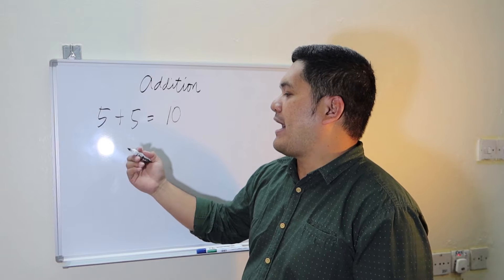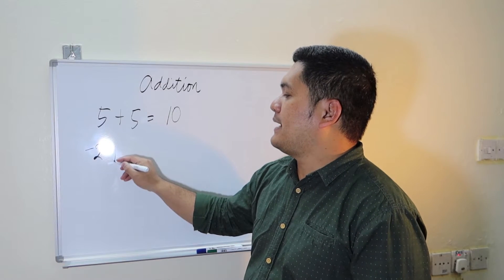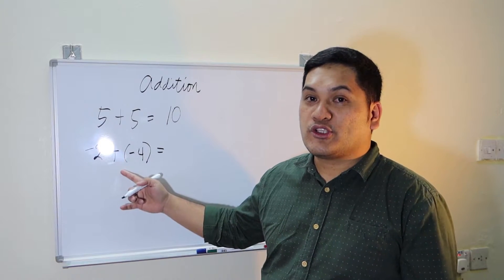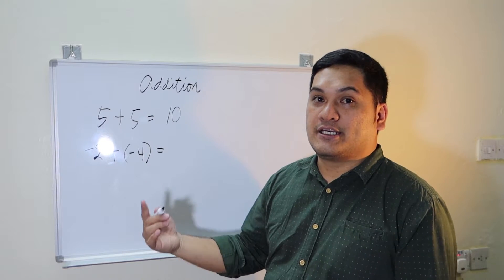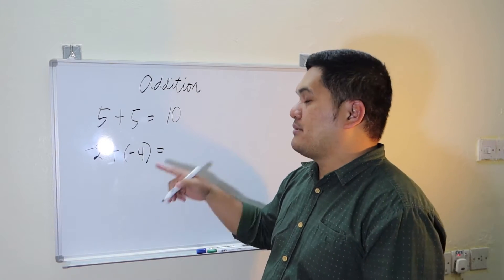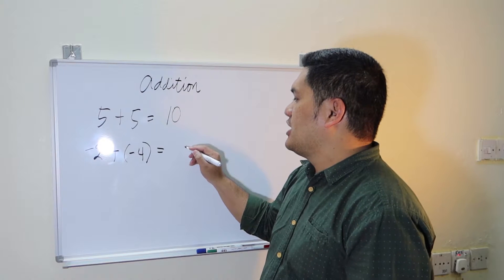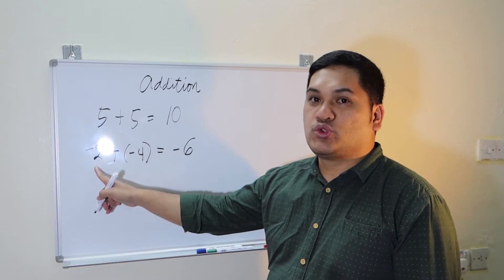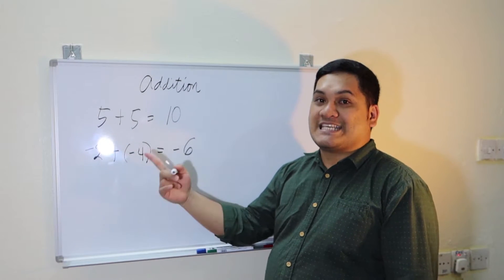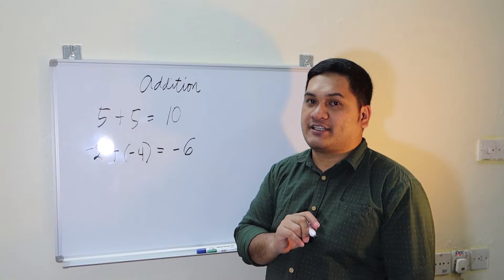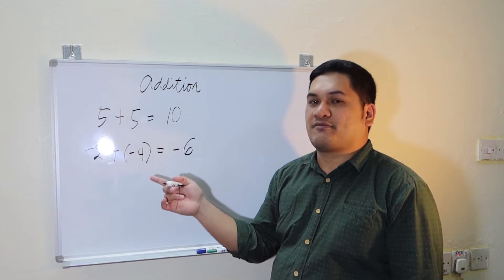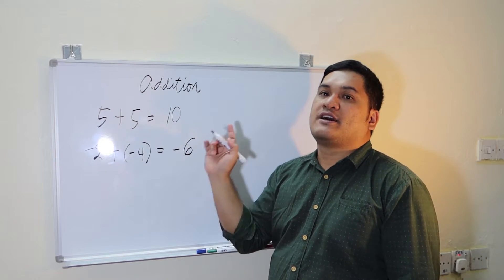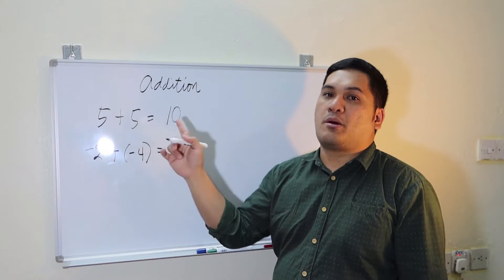If we also have negative 2 plus negative 4, they have the same sign — negative. So you're going to add the two numbers and maintain the sign. Your answer would be negative 6, because 2 plus 4 equals 6 and you maintain the negative sign. So very basic, very simple: positive plus positive is positive, negative plus negative is negative — you just add the two numbers together.